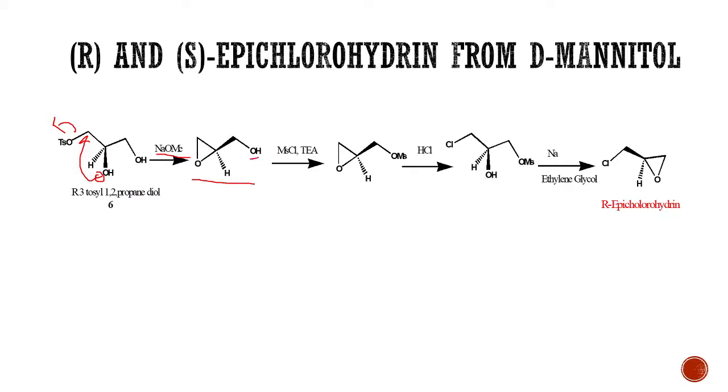This OH is again mesylated with mesyl chloride, that is methanesulfonyl chloride, in presence of TEA, that is triethylamine, as a base. Methanesulfonyl chloride will form OMs with this OH, so we get OMs protected epoxide over here.